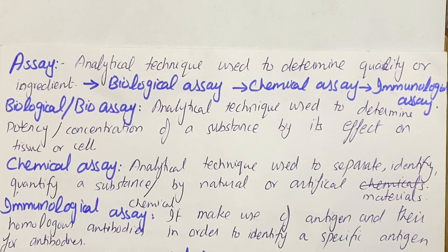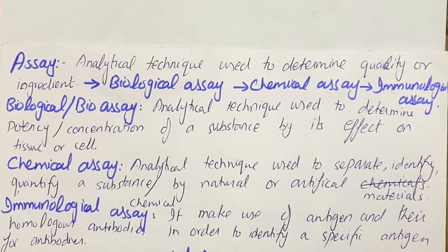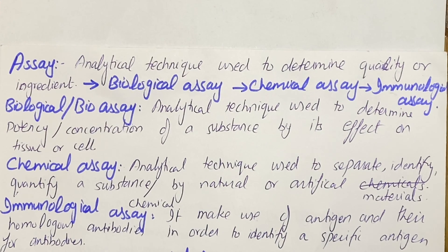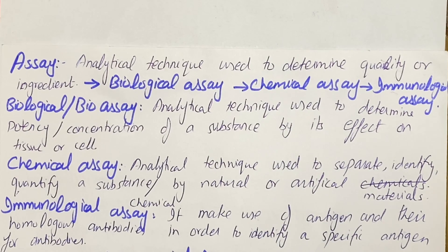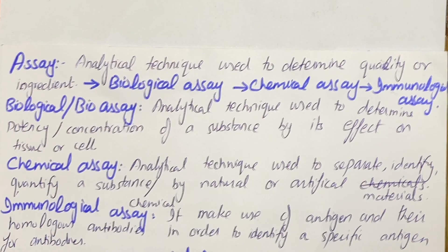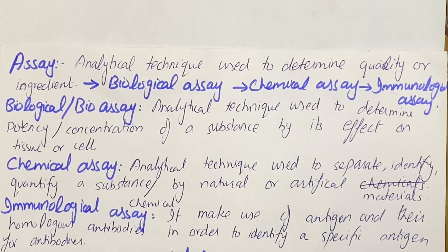Chemical assay is the study that deals with separation, identification, or quantification of a chemical compound by using natural or artificial material. There is involvement of a chemical compound, that's why it is called chemical assay. You can study separation, identification, or quantify the chemical compound by using any material that can be natural or artificial.